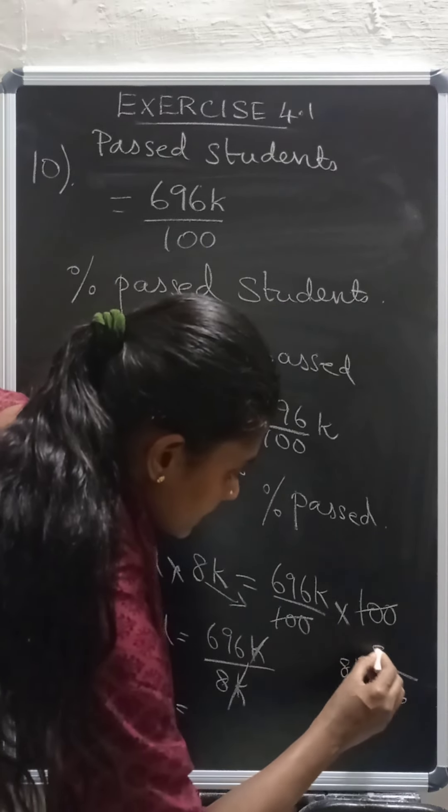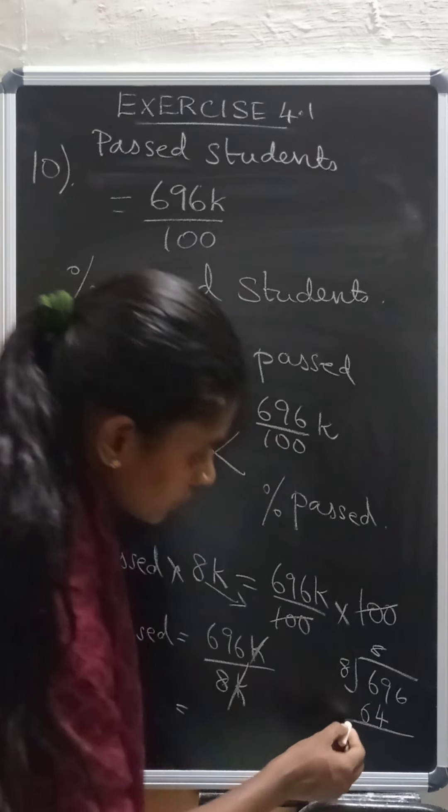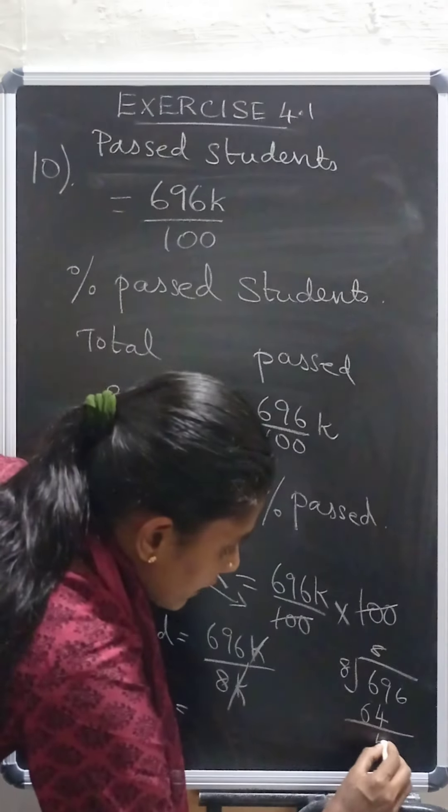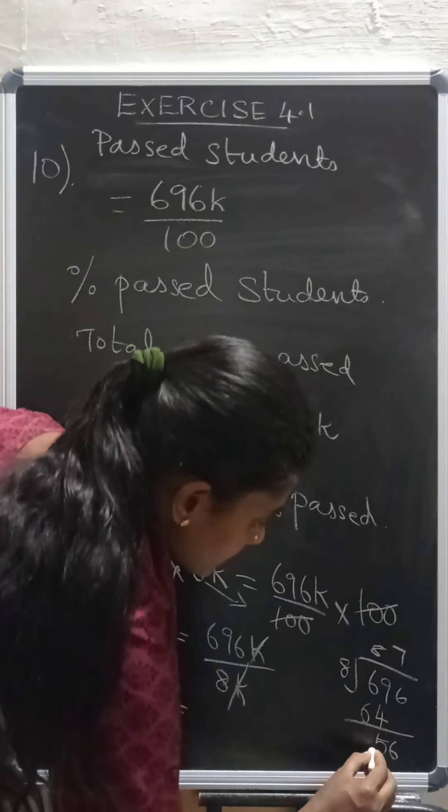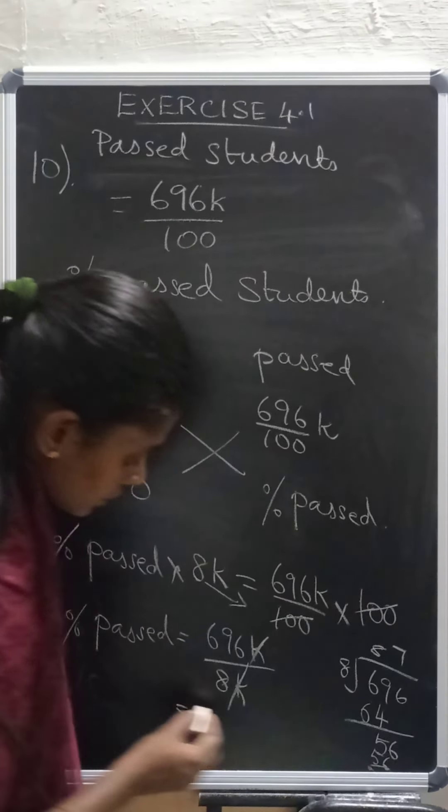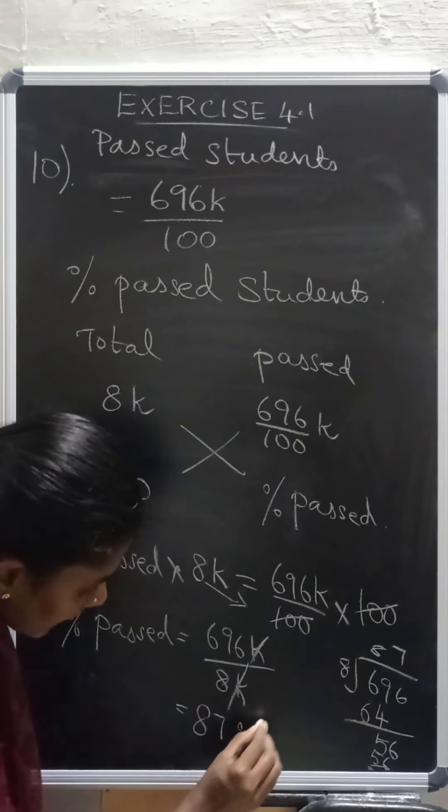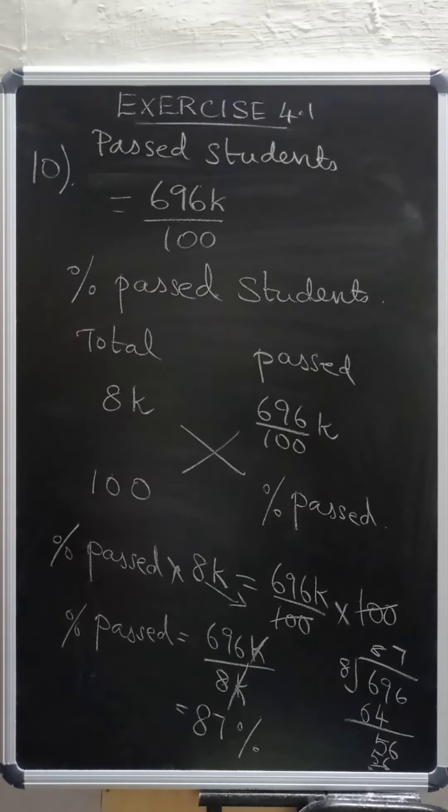8 eights are 64. So 9 minus 4 is 5, 56. So 8 sevens are 56. So which is equal to 87 percentage. Understood? Thanks for watching.